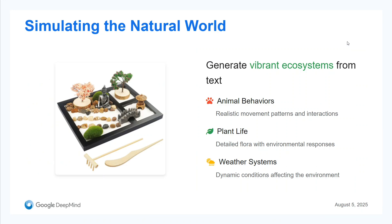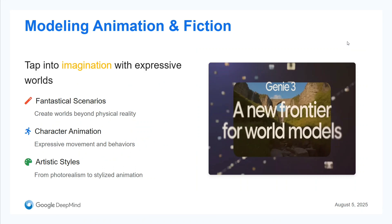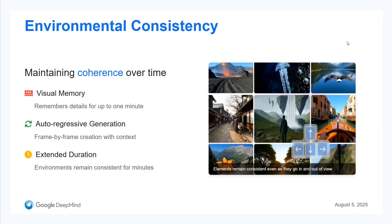This looks to be quite a complex model. It handles modeling animation and fiction — fantastical scenarios, character animation, artistic styles — it can do everything. Talking about environmental consistency, it has a visual memory. For a video up to one minute, it remembers the previous events. It is auto-regressive in nature, meaning it generates the images one by one in the video. Environments remain consistent for minutes and they won't glitch out.